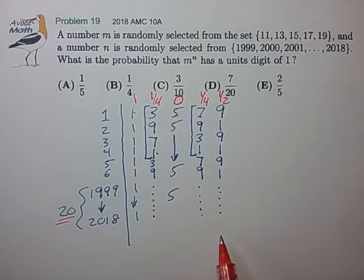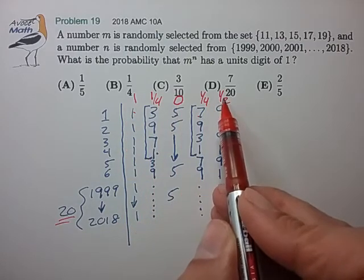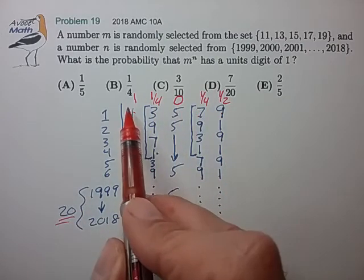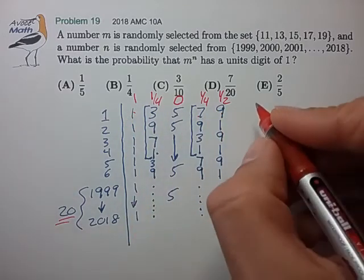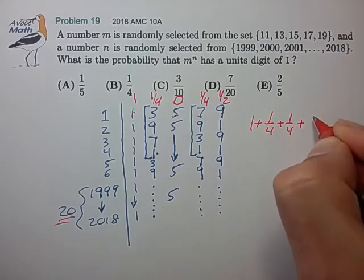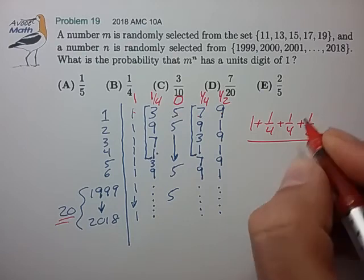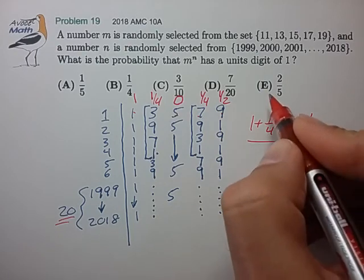These columns are all equiprobable, and we have the probability associated with a 1 for each of the columns. And so the grand probability is just the average of these column probabilities. So the column probabilities are one, quarter, quarter, and a half. We have five such columns, and that works out to two-fifths for choice E.